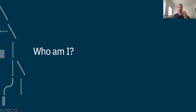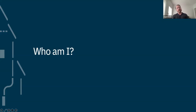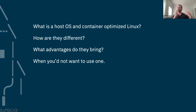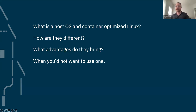I live in Edmonton, Alberta, Canada — nowhere near Columbia, Maryland — but I used to live in Maryland for many years. I met my wife there, lived in Baltimore, my dentist was in Columbia. I work on this kind of obscure operating system at Amazon and I really enjoy talking about it. Here's the agenda: I'll cover what a host OS is, what container-optimized Linux is, the advantages, and when you shouldn't use it.